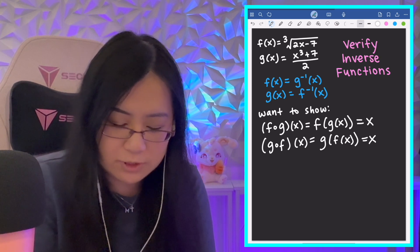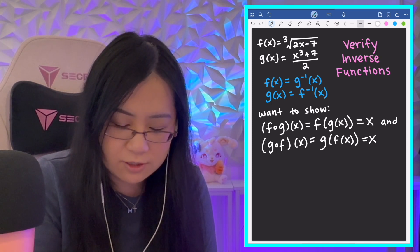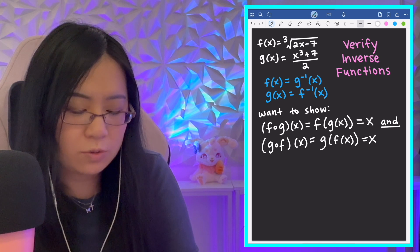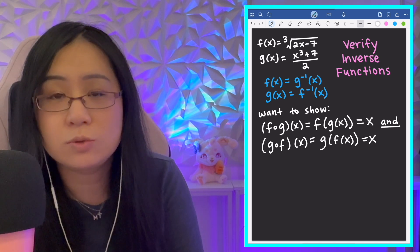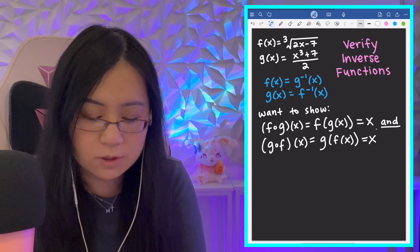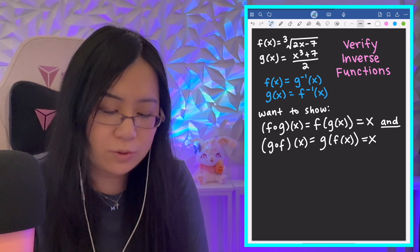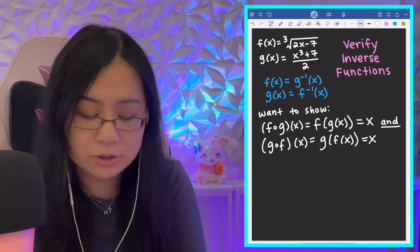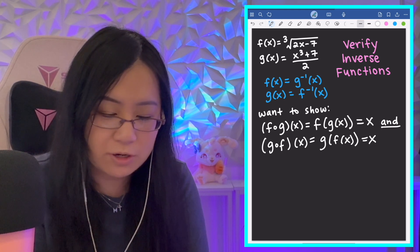And the other way around, too, we want to show that g of f, which I'm going to write it as g(f(x)), is also equal to x. So, we want both of these to be true. We just want the two compositions to equal x. So, before we actually do the algebra here, let's build a little bit of intuition about what's going on.